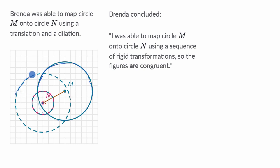And so after the translation, we have the circle right over here. And then she dilates it, and the center of dilation looks like it is point N, and so she dilates it with some type of a scale factor in order to map it exactly onto N.